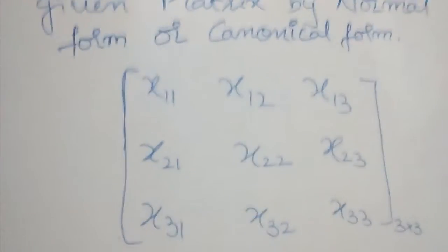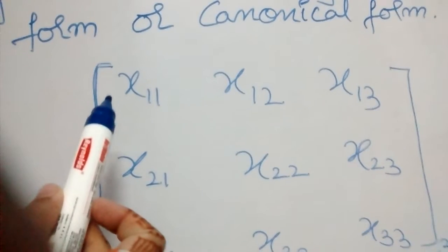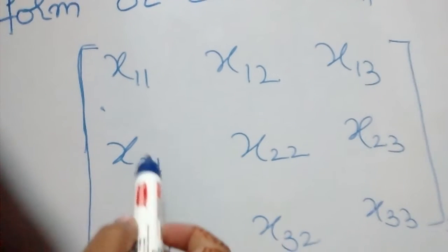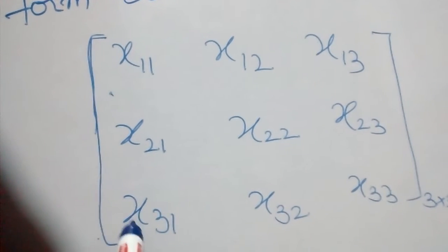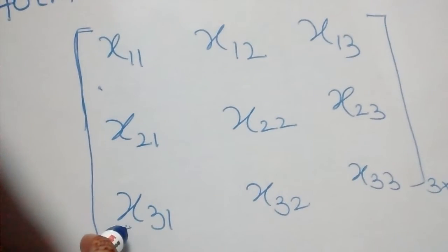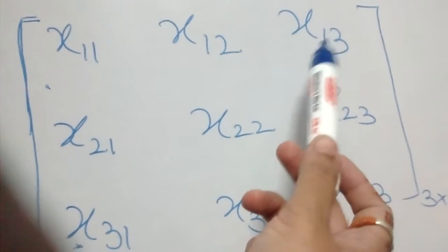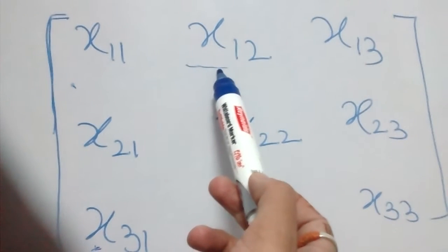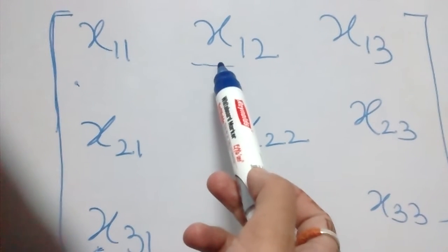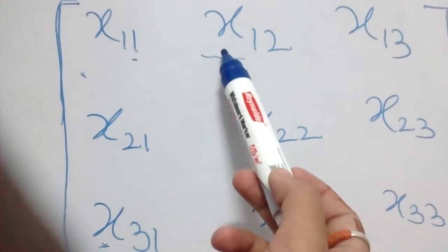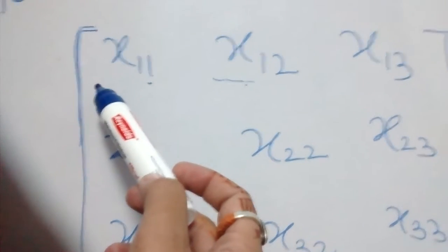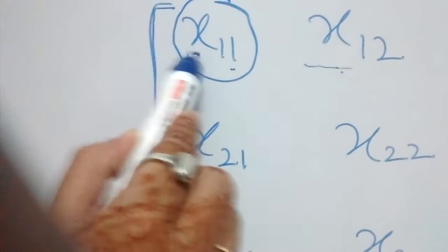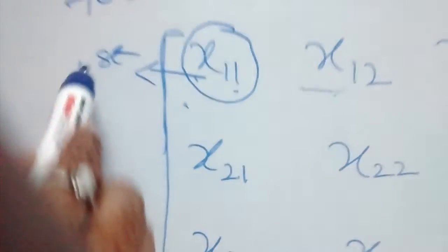The first step is to make the very first element as 1. By seeing the possibilities, we can shift any row or column. If we have a 1 somewhere, we can interchange the first row with R3, or if there is a possibility in a column, we can interchange columns — for example, swap C1 with C2 — or we can simply divide that row by the particular number to get 1.